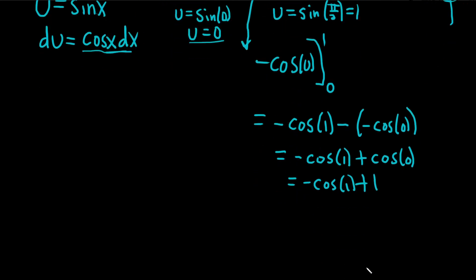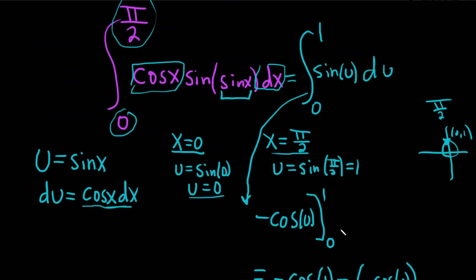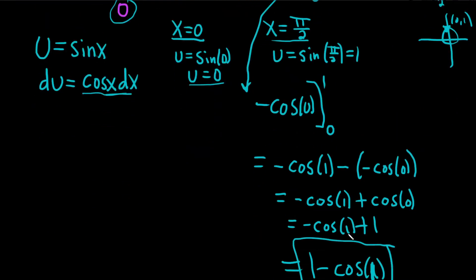So if you want to write it in maybe a cooler way, we can just write it as 1 minus the cosine of 1. And that would be the value of this definite integral. So I hope this video has been helpful. Good luck.